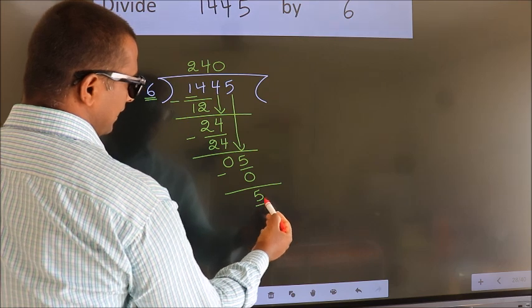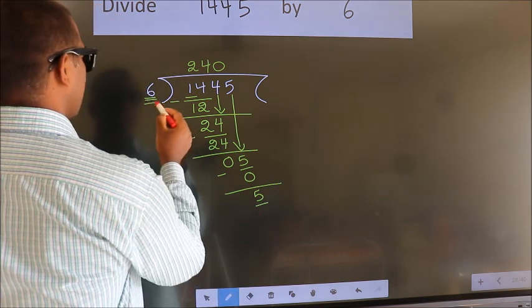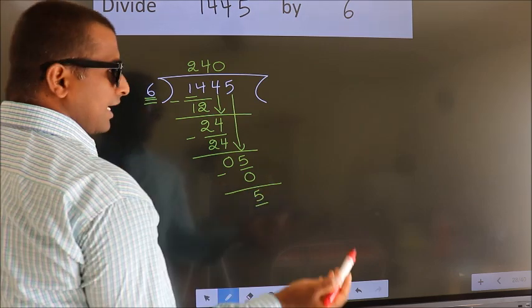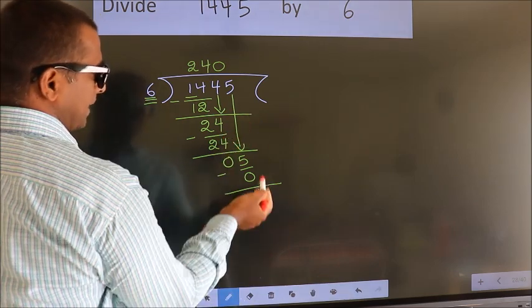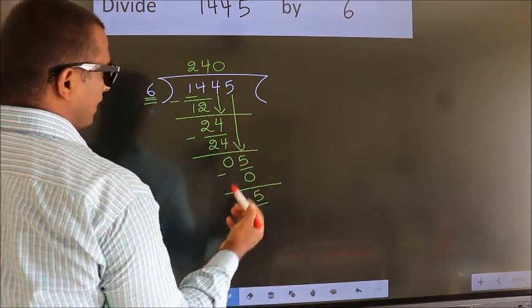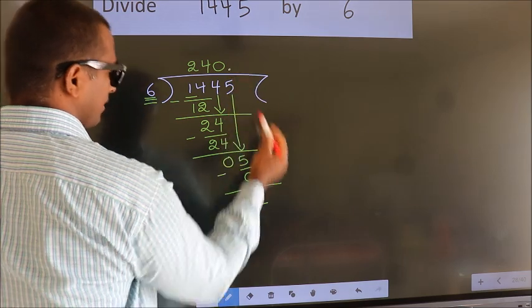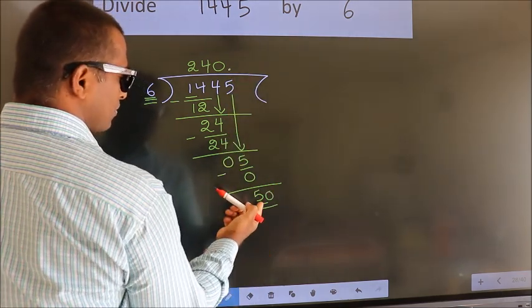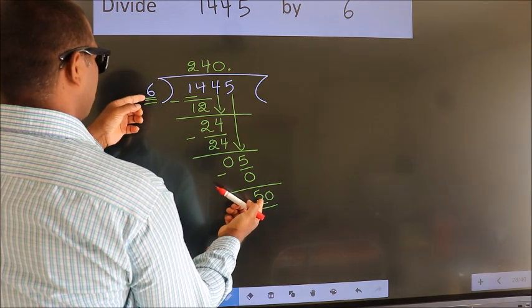Here we have 5, here 6. 5 is smaller than 6, and we did not bring any number down. So now we can put dot, take zero. So 50. A number close to 50 in the 6 table is 6 times 8, which is 48.